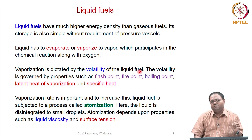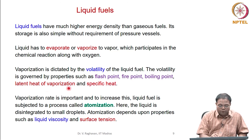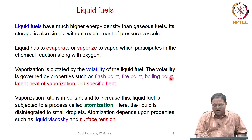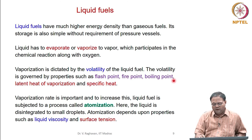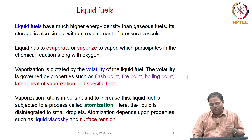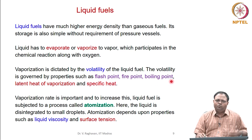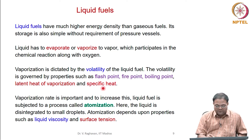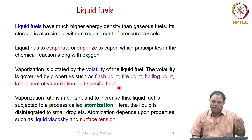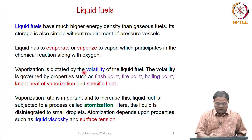Volatility is a property governed by flash point, fire point, boiling point, latent heat of vaporization, and specific heat. Flash point, fire point, and boiling point are temperatures that indicate how much vapor can evolve from the liquid. When liquid starts to burn, its surface reaches approximately the boiling point. The latent heat of vaporization is the energy required to vaporize the liquid, and specific heat is the heat needed to raise the liquid from room temperature to close to the boiling point.